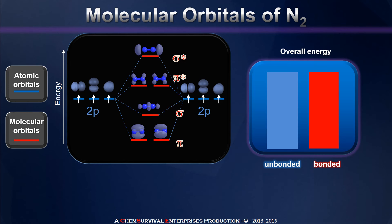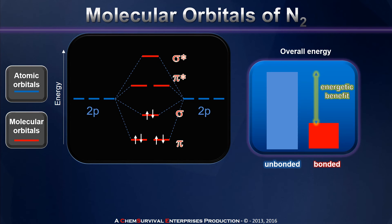Nonetheless, when we use the electrons from nitrogen's 2p orbitals to populate this new MO system, notice that they all go into bonding MOs. And better than that, there's nothing left. There are no extra electrons to fill in those antibonding MOs and counterbalance the energetic benefits. So this is a tremendously energetically beneficial arrangement.